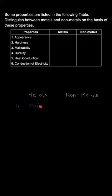On the basis of the appearance, the metals generally they can be shiny, while the non-metals they are dull in texture. While if we look at the hardness, so metals are generally very hard in nature but non-metals are brittle in nature.